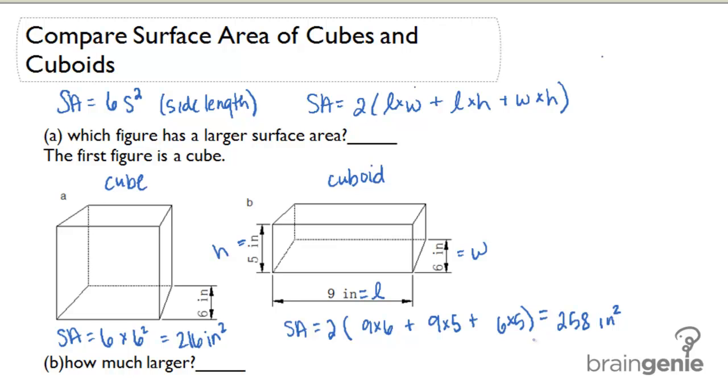So the first part of the question says which one has a greater surface area? The cube at 216 square inches or the cuboid at 258 square inches? And I'm going to go with the cuboid.